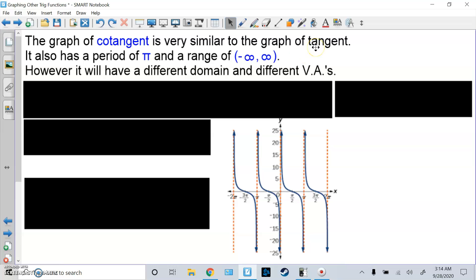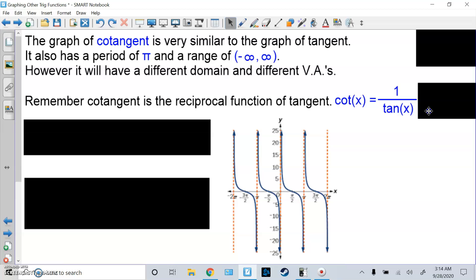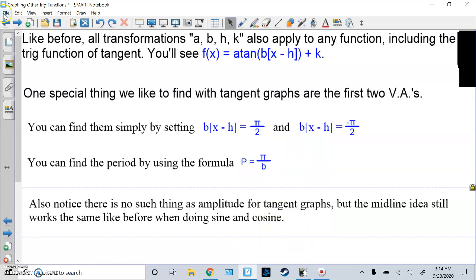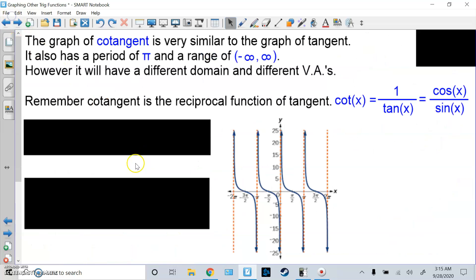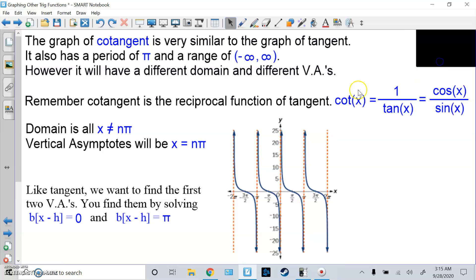Next we have cotangent. It's very similar to the graph of tangent. It has a period of pi and a range of all real numbers, negative infinity to positive infinity. But it will have a different domain and different vertical asymptotes. So here's this graph, but let's remember cotangent is a reciprocal function of tangent. That is cot(x) = 1/tan(x), and if tangent is sine over cosine, y over x, then cotangent is cosine over sine. Here we don't want sine to be 0. So sine is 0 on the unit circle when you're at 0 and pi. So if you notice right here, 0 has the vertical asymptote and pi has the vertical asymptote. And that's different from before where pi over 2's had the asymptote. So here, our domain is going to be all x's where x does not equal some multiple of pi. It can't be 1 pi, 2 pi, 3 pi, it can't be negative 1 pi, negative 2 pi, it can't even be 0 pi itself. Those are where the vertical asymptotes are. And like tangent, we want to find the VAs. You do them by solving b(x - h) = 0, because that's the first vertical asymptote, and then b(x - h) = pi because the second asymptote.